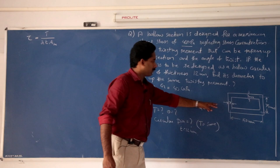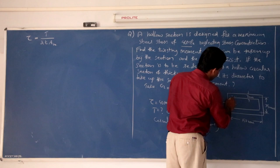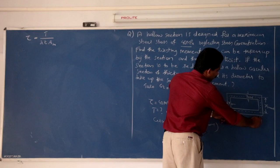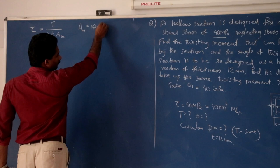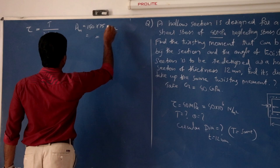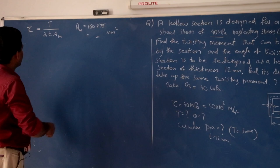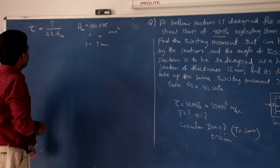This is the same thickness. The mean — suppose if I draw the median line — the median line width and height are 150 into 75. Just multiply the width and height. So, Am is equal to 150 into 75, that much millimeter square. Then T, the thickness, is 7 mm.